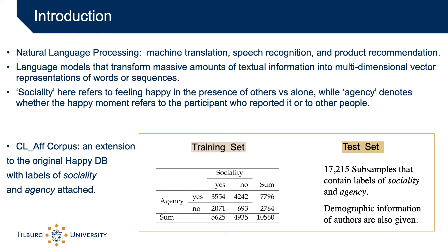At the core of these language processing technologies are language models that transform massive amounts of textual information into multi-dimensional vector representations of words or sequences, which are then used as input representations in complex artificial intelligence tasks. In this thesis, we compare diverse ways of converting texts into representations to learn two concepts of happiness: sociality and agency.